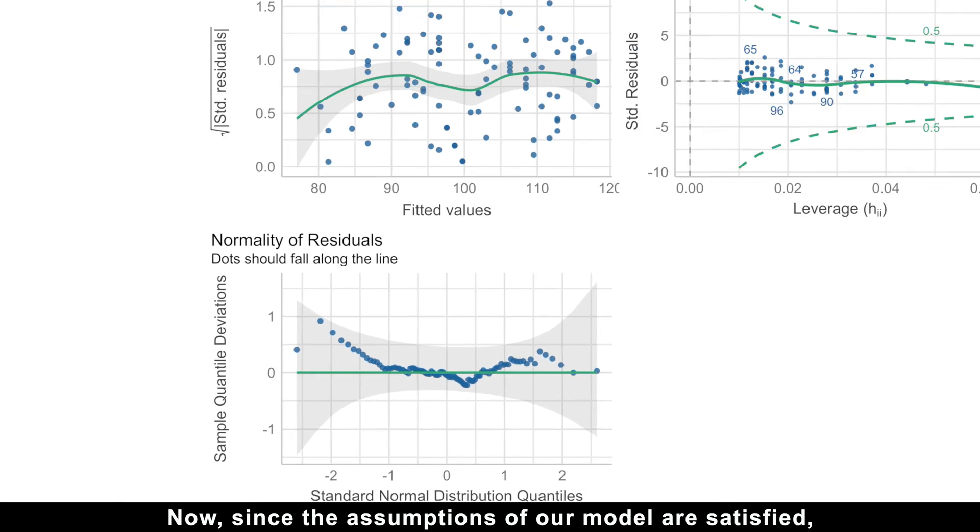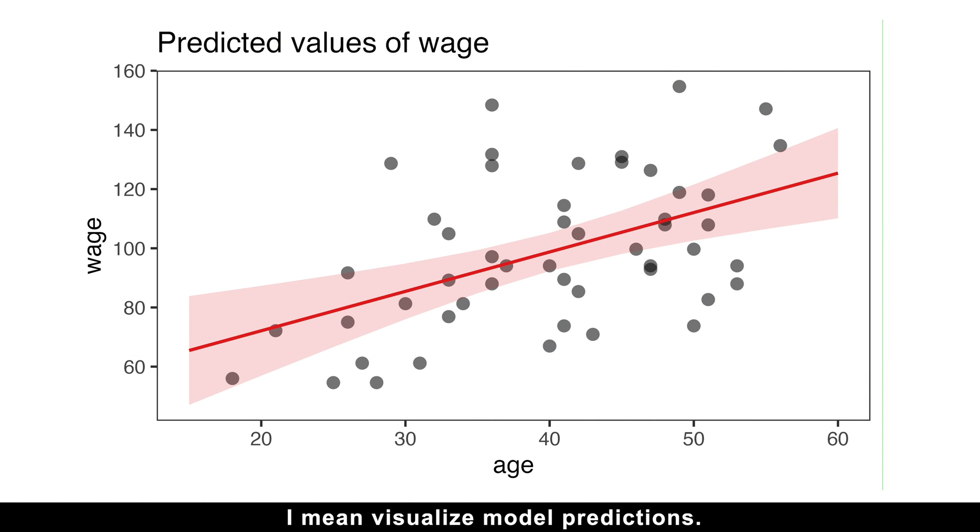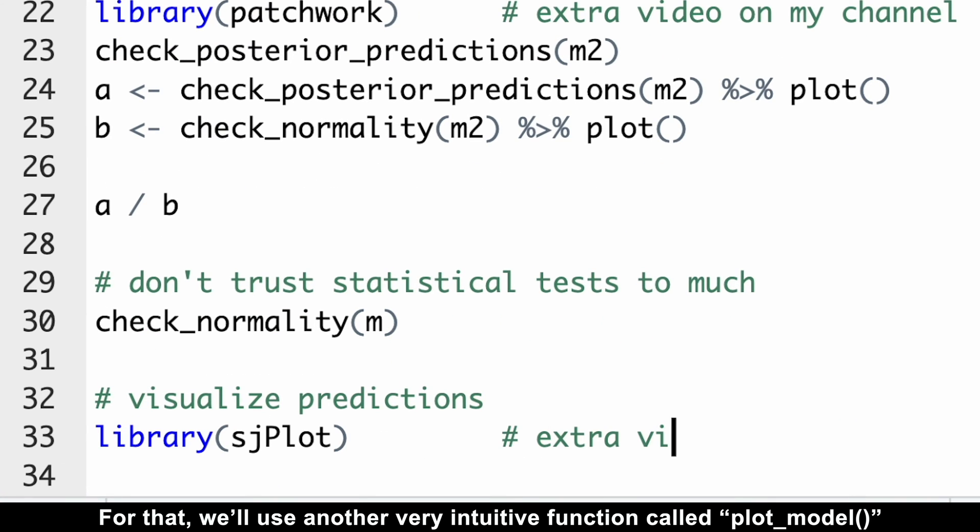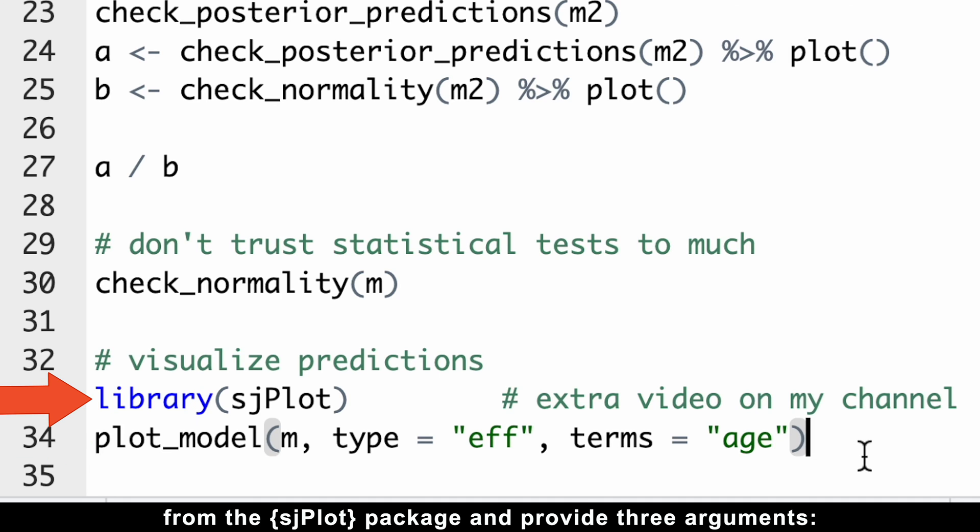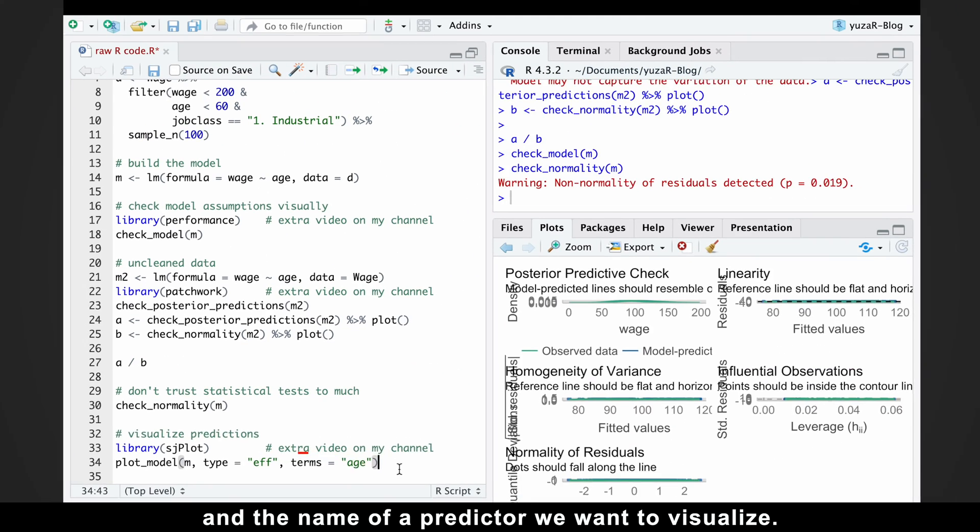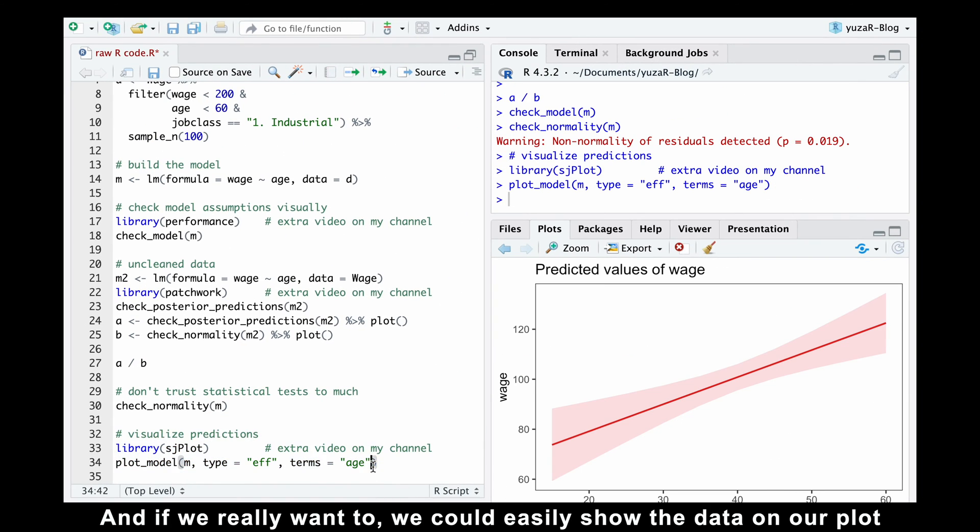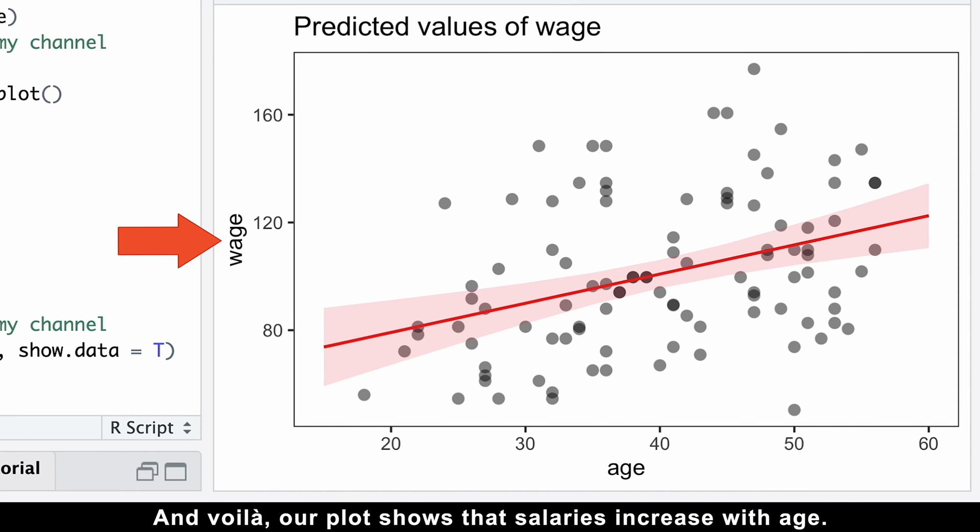Now, since the assumptions of our model are satisfied, we can visualize model results. And by results, I mean visualize model predictions. For that, we'll use another very intuitive function called plot_model from the sjPlot package and provide three arguments: the model name, the type of predictions (we'll use effect to get an effect plot), and the name of a predictor we want to visualize. And if we really want to, we could easily show the data on our plot. And voila, our plot shows that salaries increase with age.